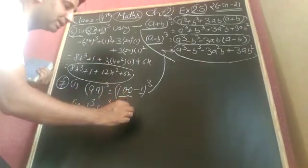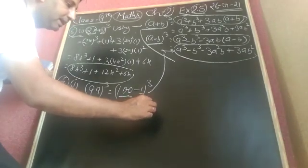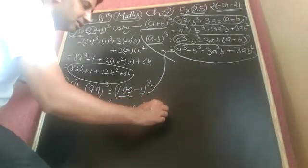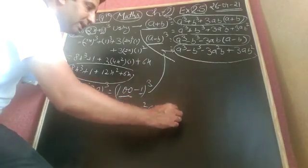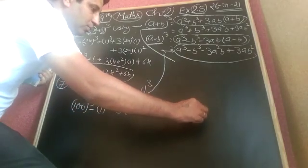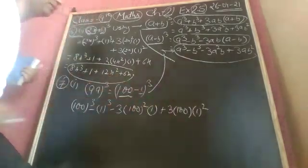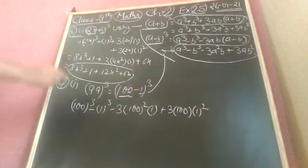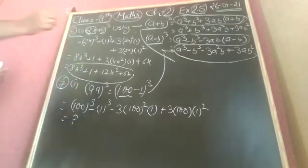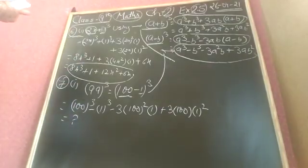We get 100 cube minus 3A squared, where A squared means 100 squared and B is 1, plus 3AB squared where A is 100 and B squared is 1 squared. After solving this, you get the answer — do the calculation on your own. All parts are the same.